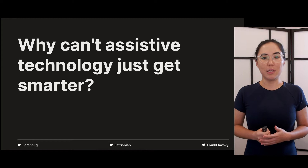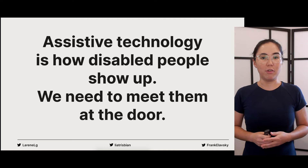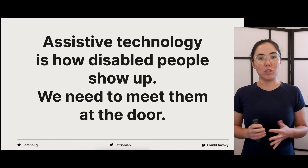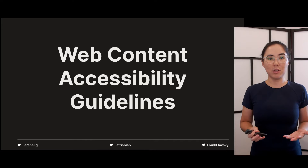A question I often get asked when I give talks about accessibility is: why can't we just make the assistive technology smarter? Assistive technology is getting better every day, but it's not quite there yet. We need to meet assistive technology halfway by building things in an accessible way. Assistive technology is how disabled people show up, and we need to make sure we meet them at the door.